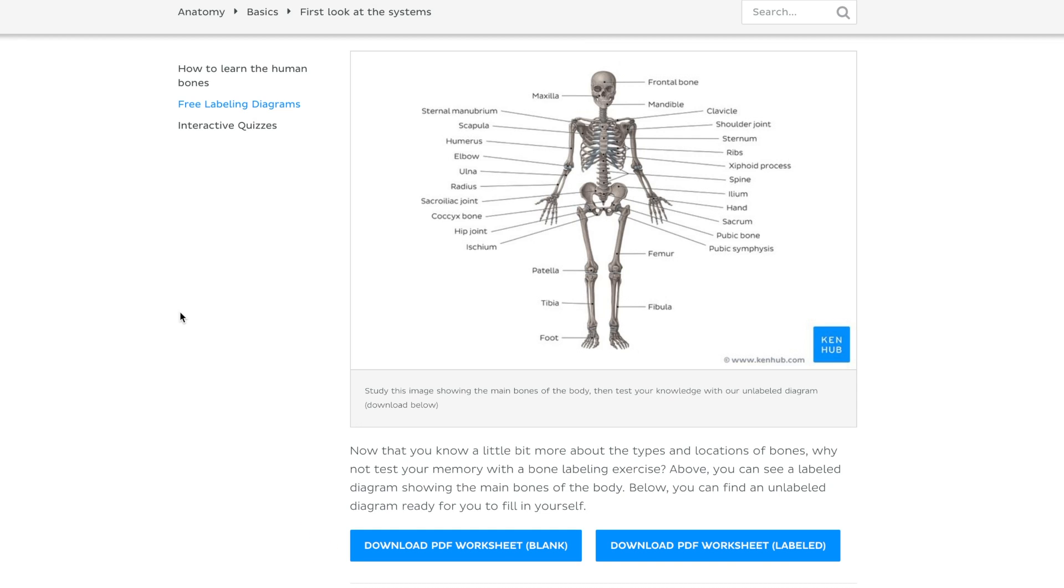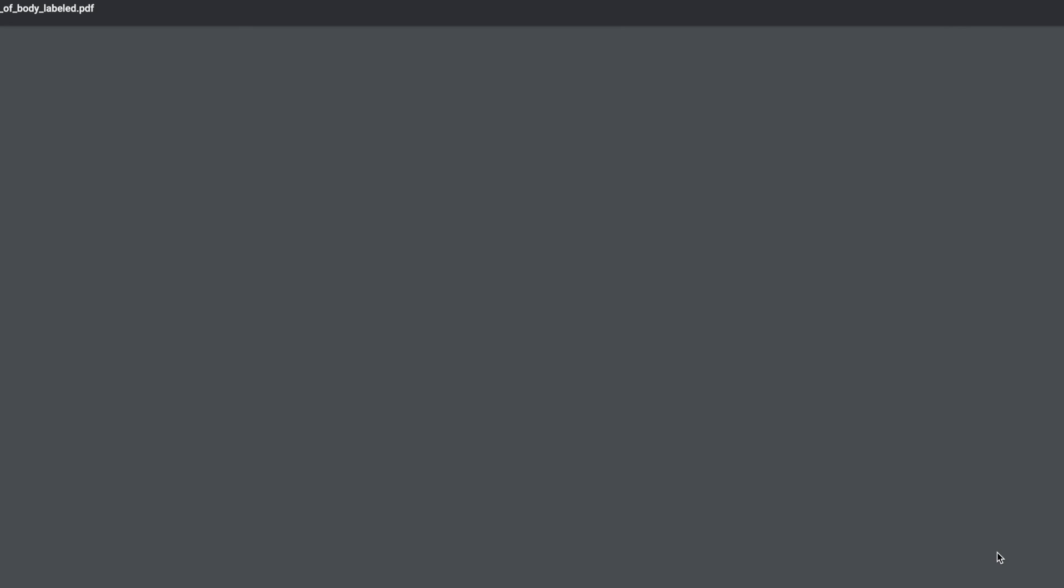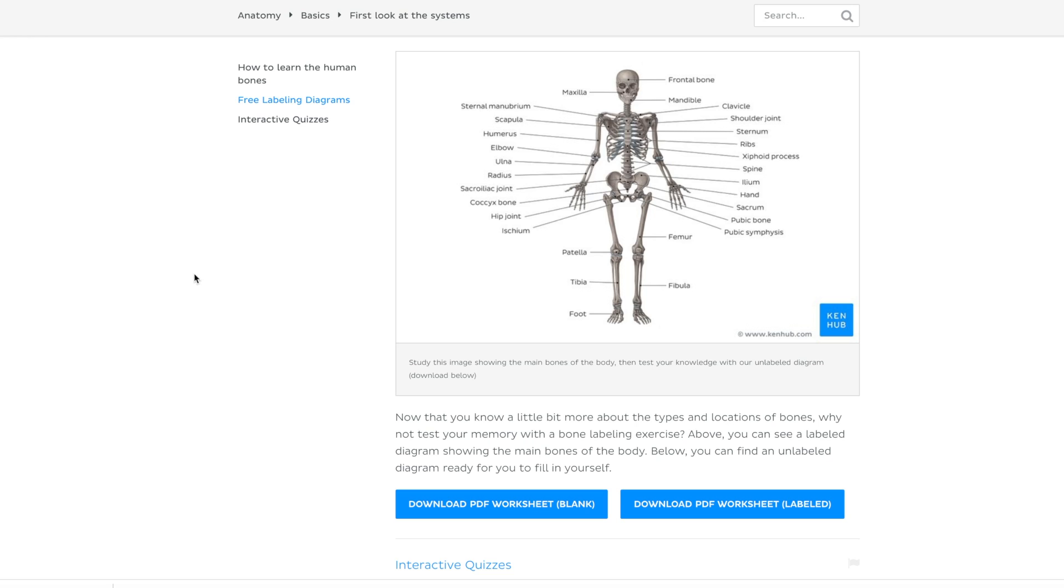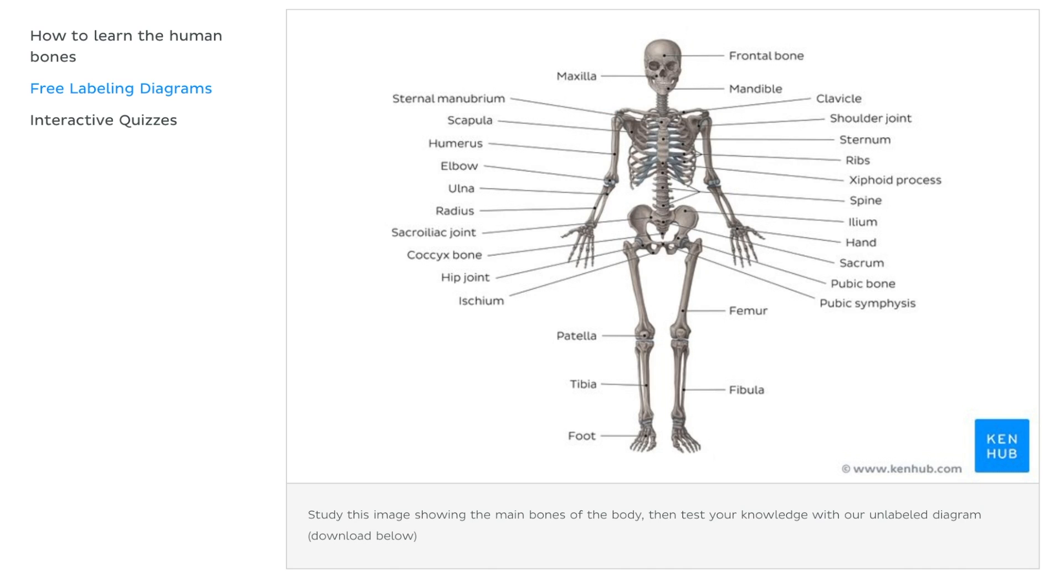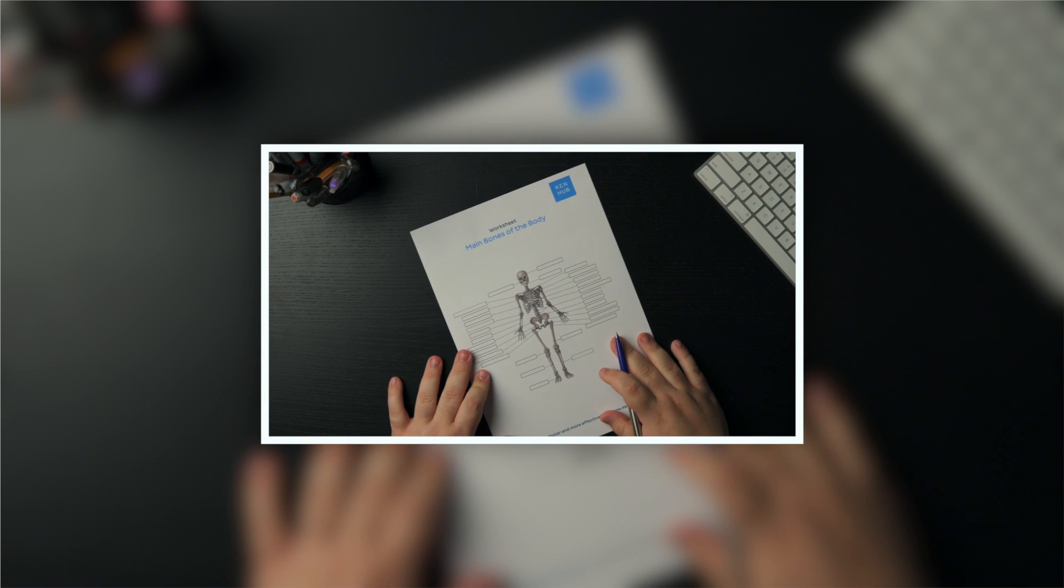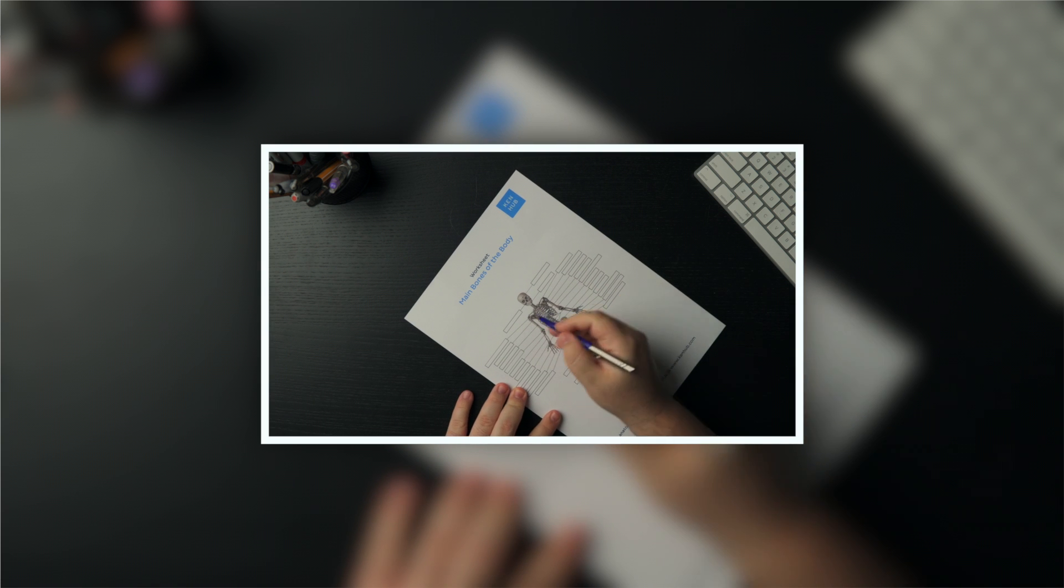Before you start labeling diagrams, I recommend that you review your knowledge on the main bones of the human body. To do that, you can first use this button to download the labeled sheet. And here you can see all the bones we will be learning today. Alternatively, you can also use this image in the article with an overview of all the main bones. Spend 5 to 10 minutes looking at these labels, or watch this video as I will show you how to label this diagram.